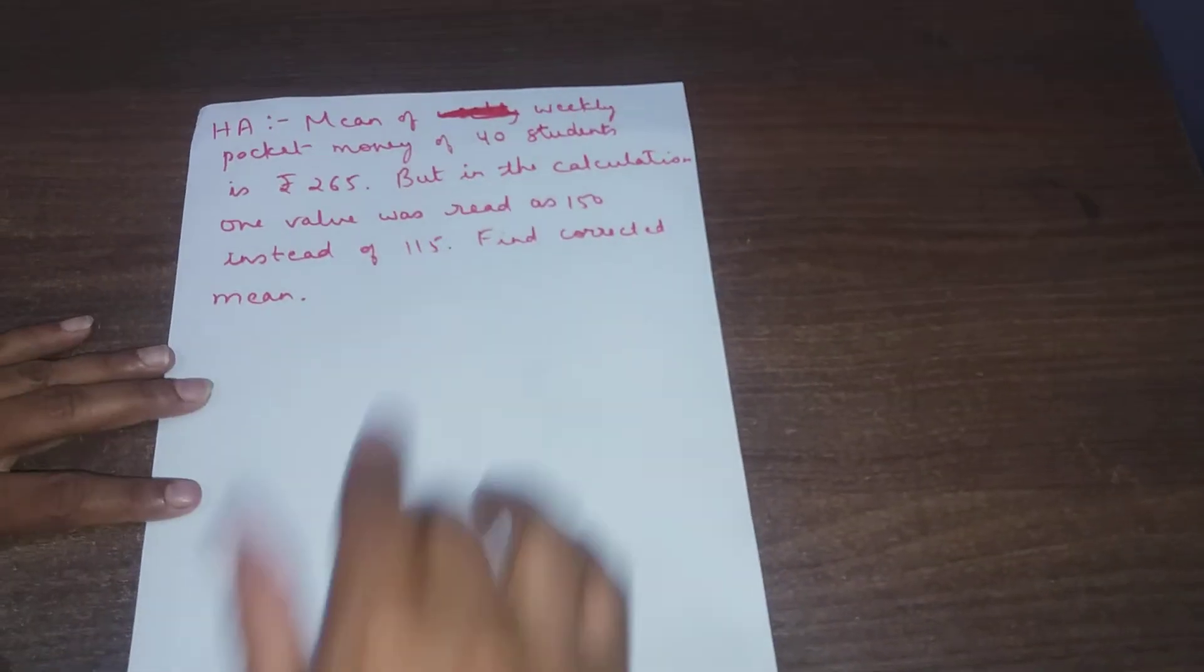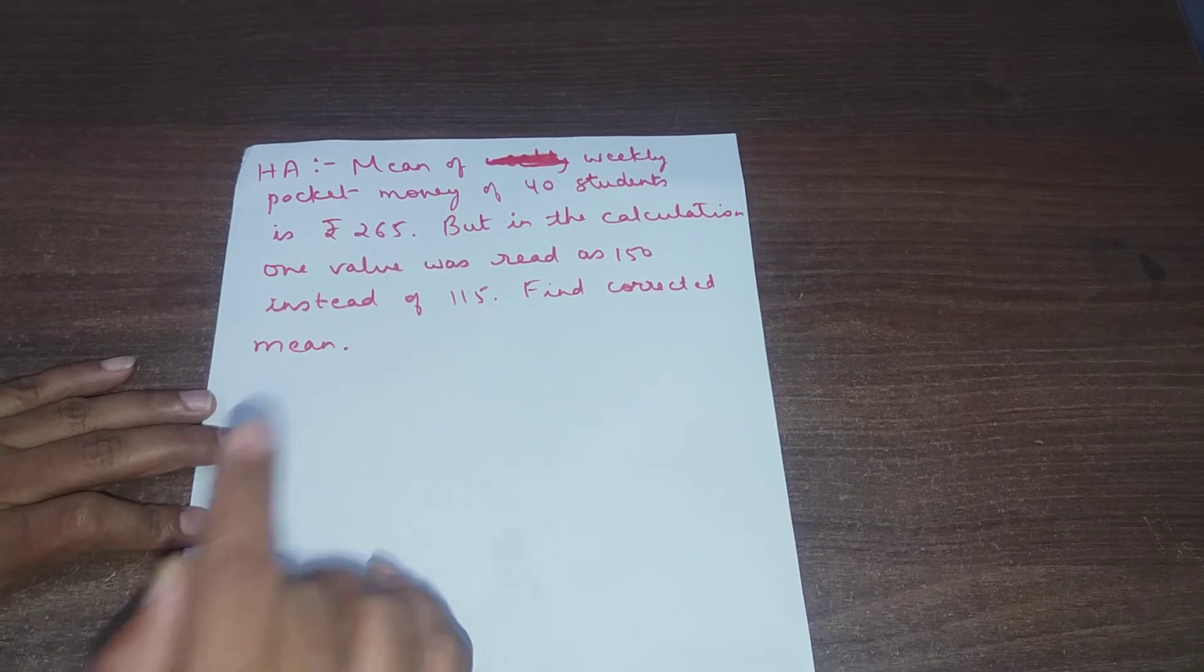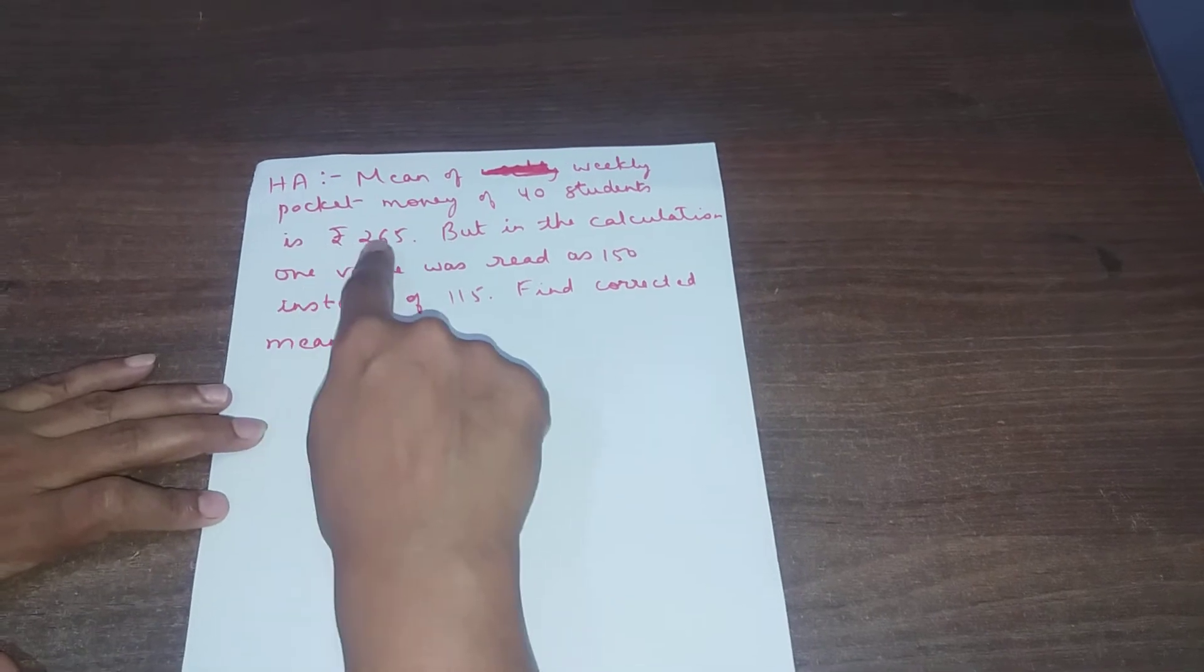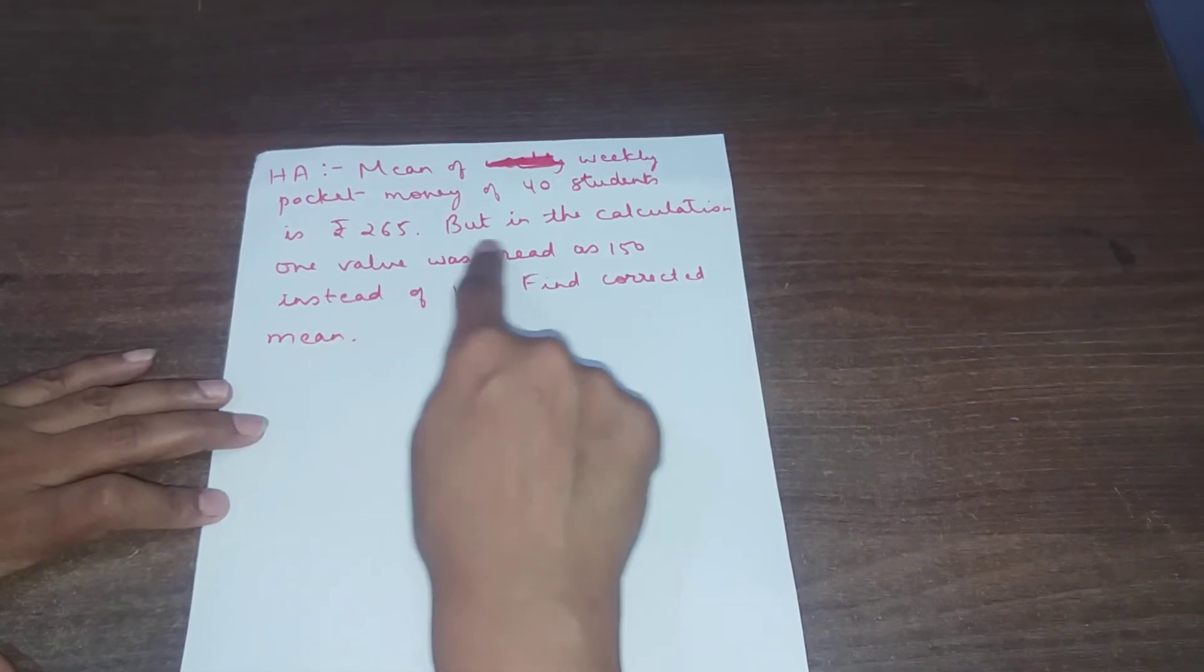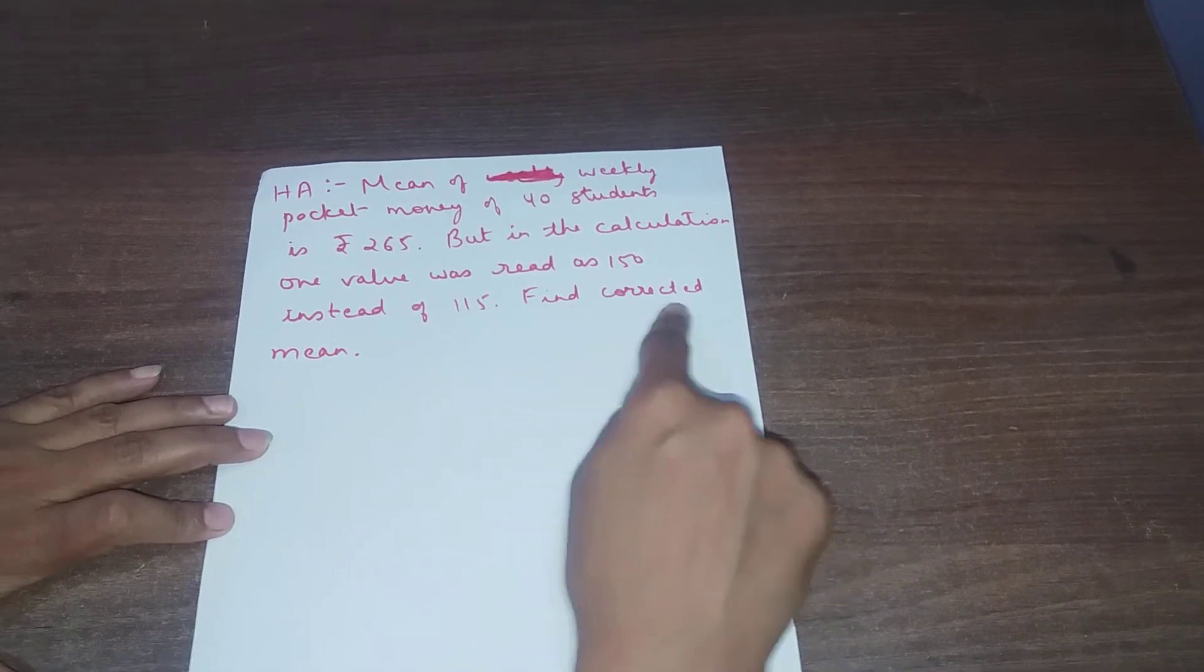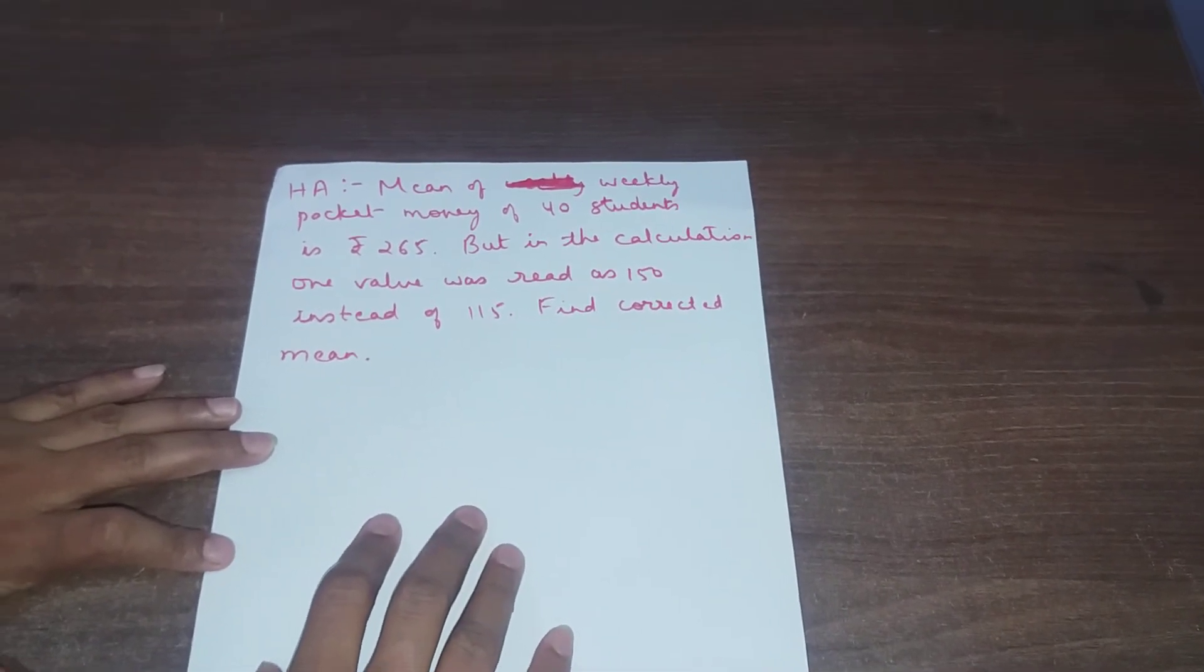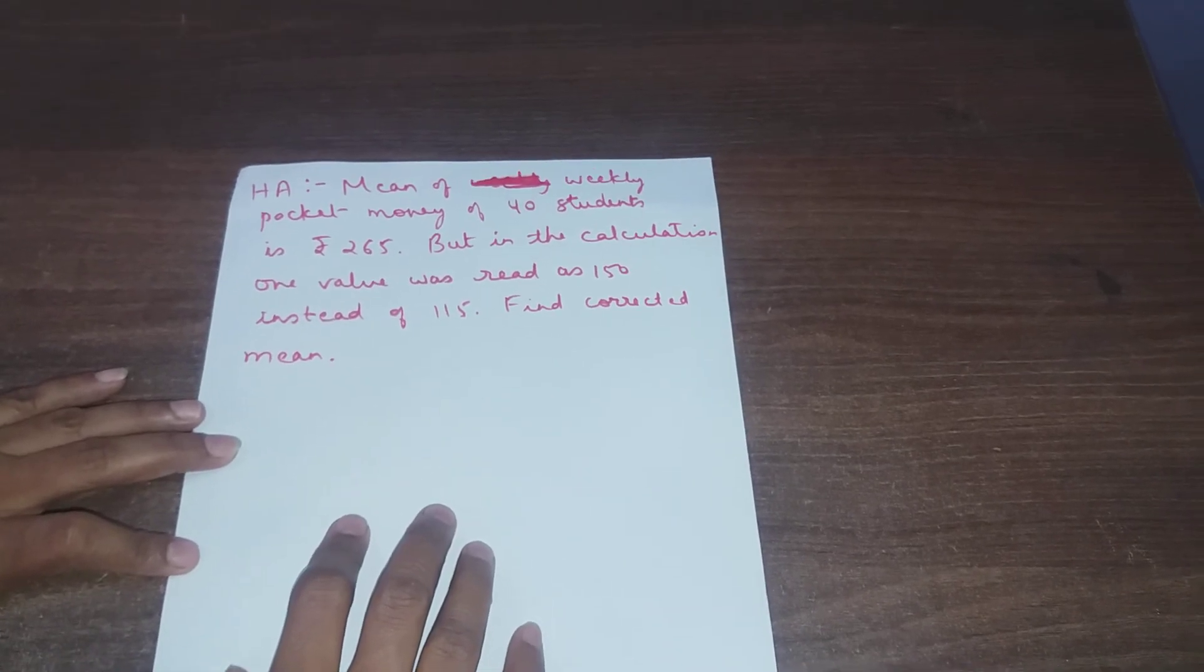Let me know its answer in the comment box. Mean of weekly pocket money of 40 students is rupees 265, but in the calculation one value was read as 150 instead of 115. Find corrected mean. I will wait for your comments, and please like my video. It will encourage me to make more videos for you. Thank you.